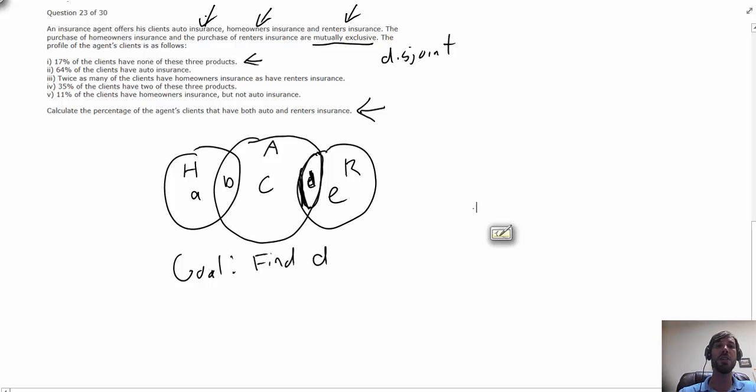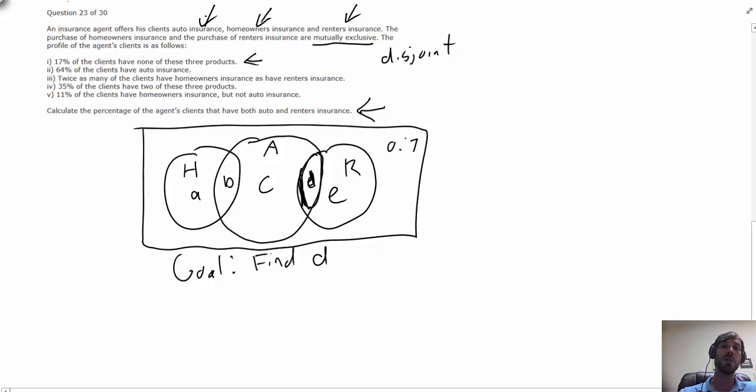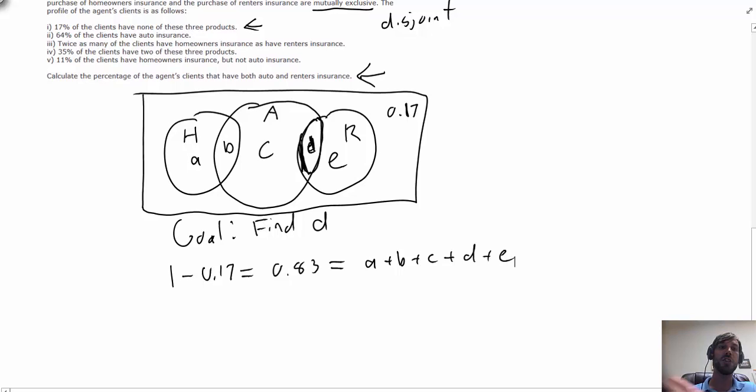Let's go through our conditions. The first condition we're given here is that 17 percent have none of the three products, so if I drew my whole universe of clients, then the outer universe would contain 17 percent of everyone, which means the inner universe would contain 1 minus 0.17 or 83 percent of everyone. From the letters I've defined, that would be the sum of all five unknowns: A plus B plus C plus D plus E.